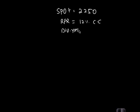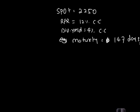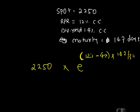Let's do a couple of them. Spot price is 2250, RFR 12% continuously compounded, dividend yield is 4% continuously compounded. The expiry or maturity is 147 days. Find out no arbitrage forward price. Your answer would be 2250 × e^((12% - 4%) × 147/365) and that's coming out to be 2323.